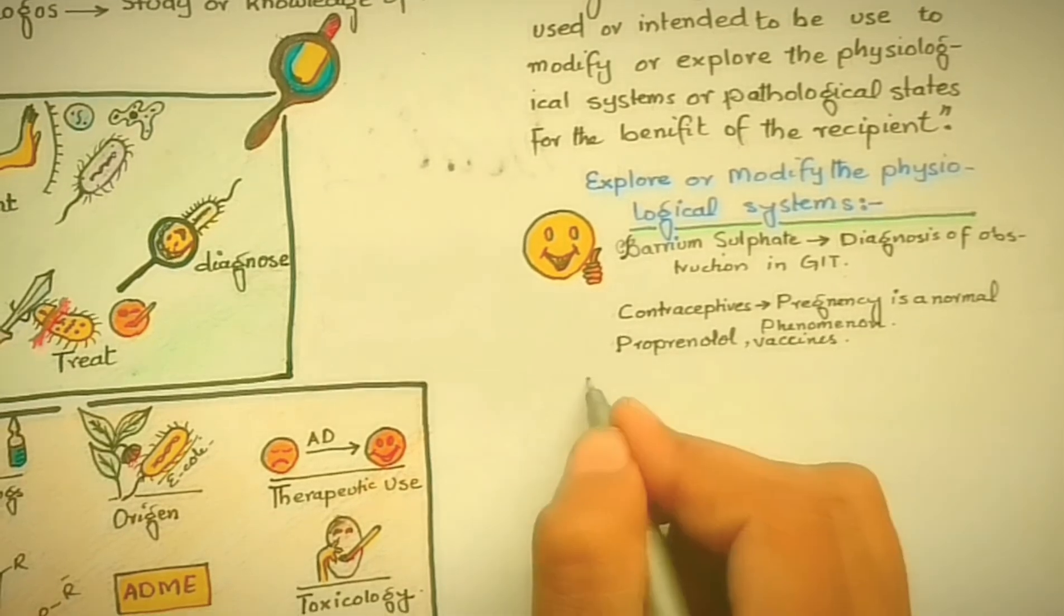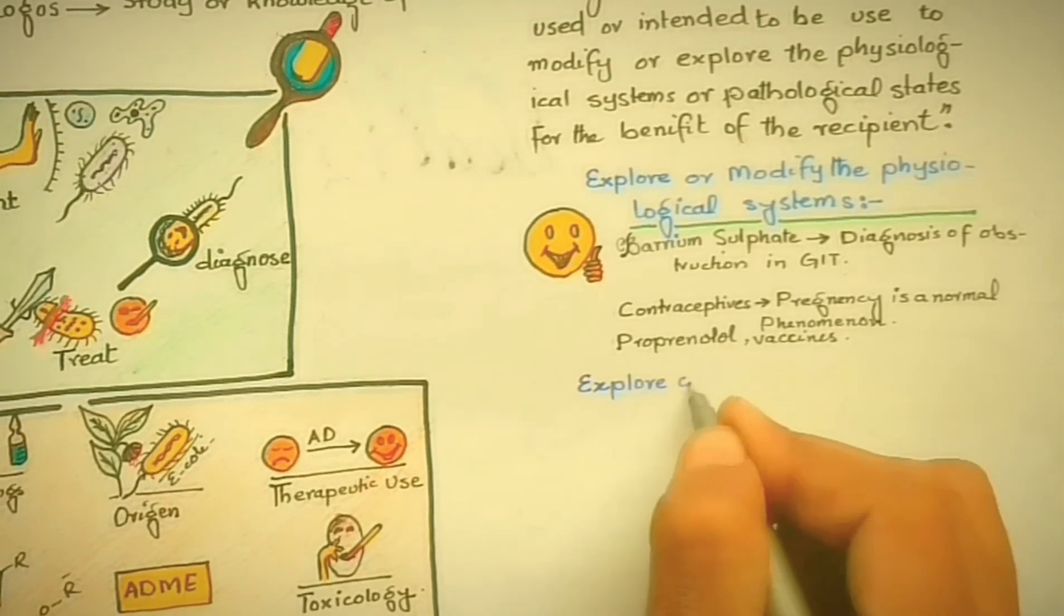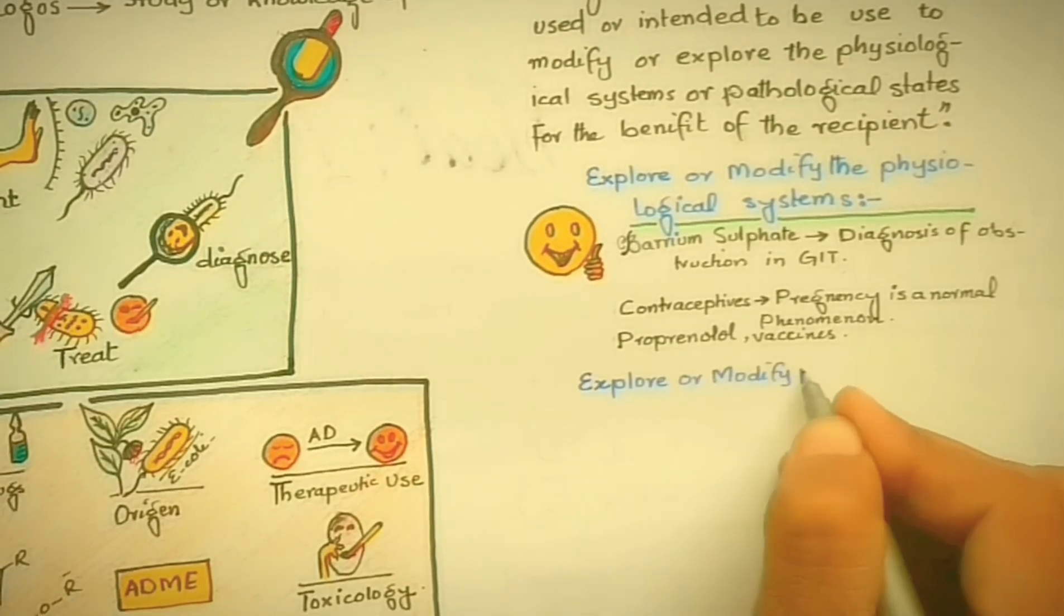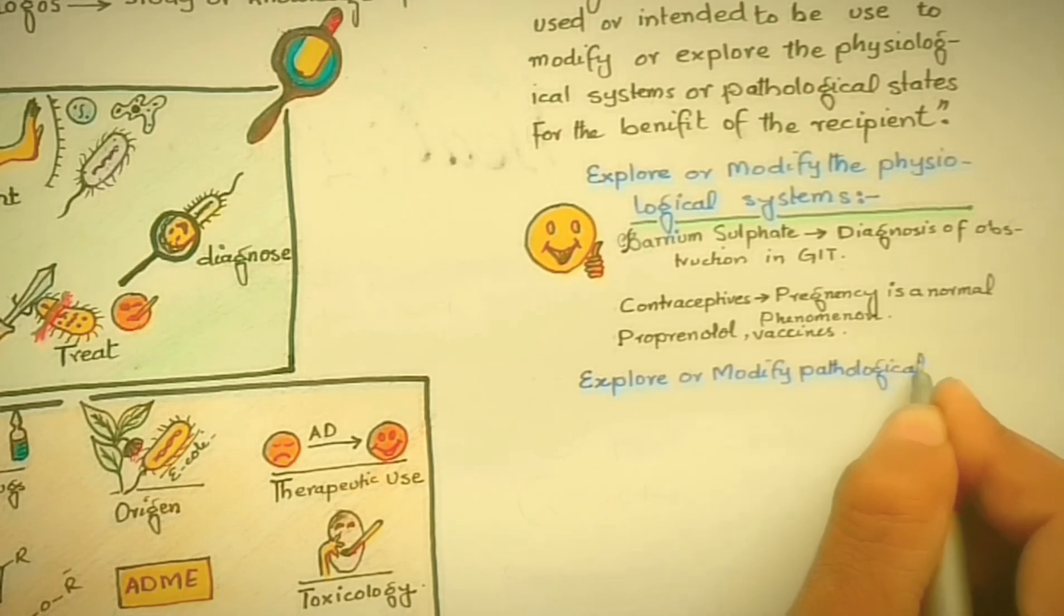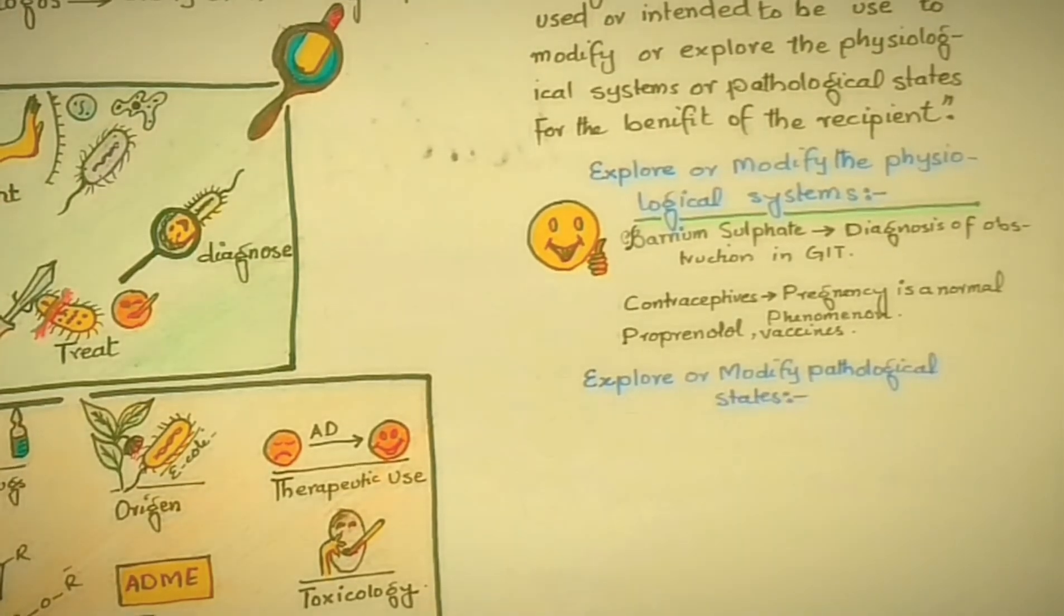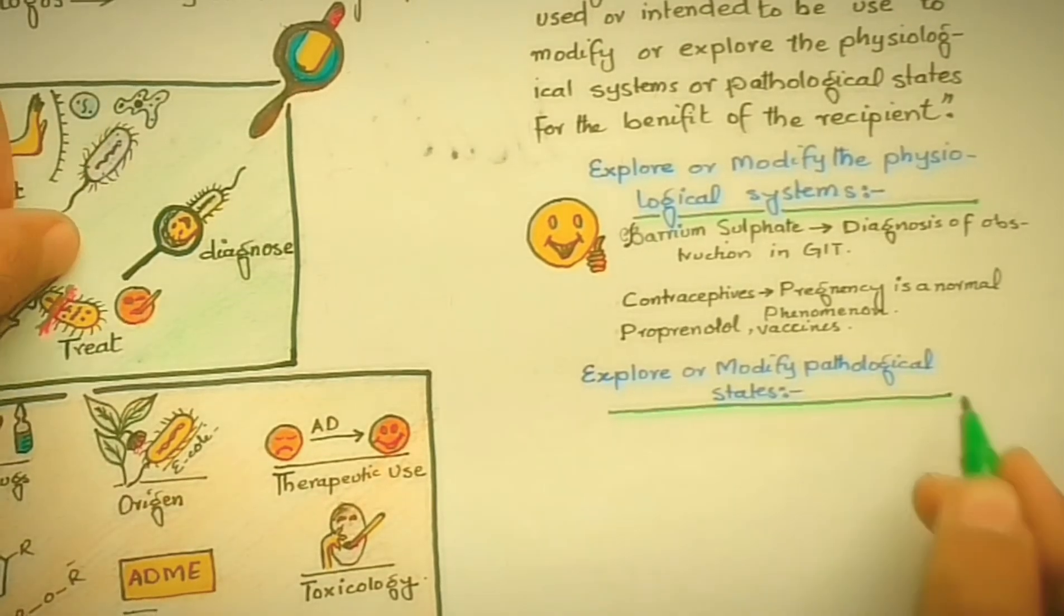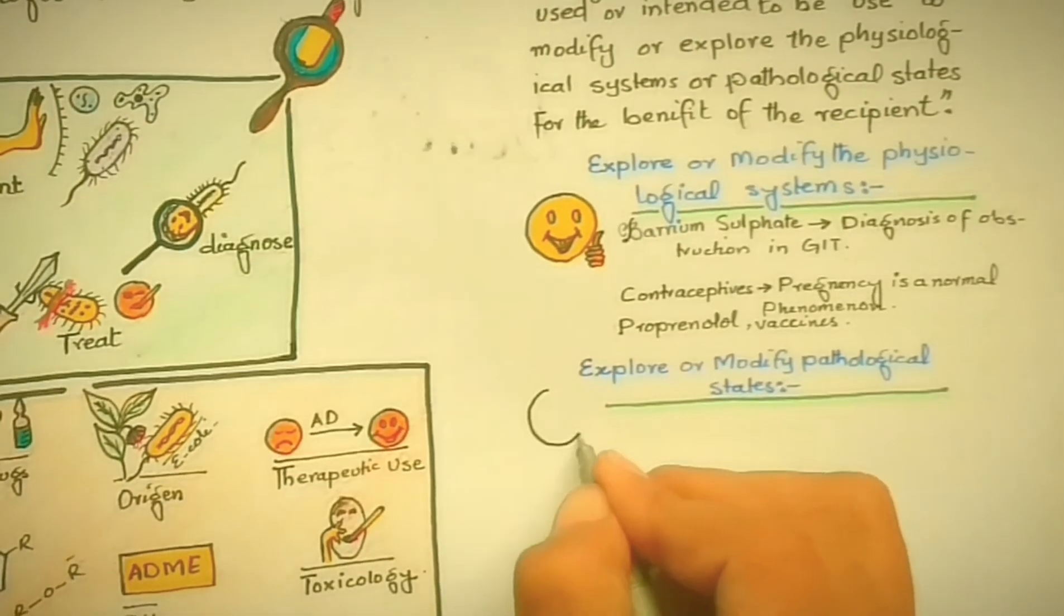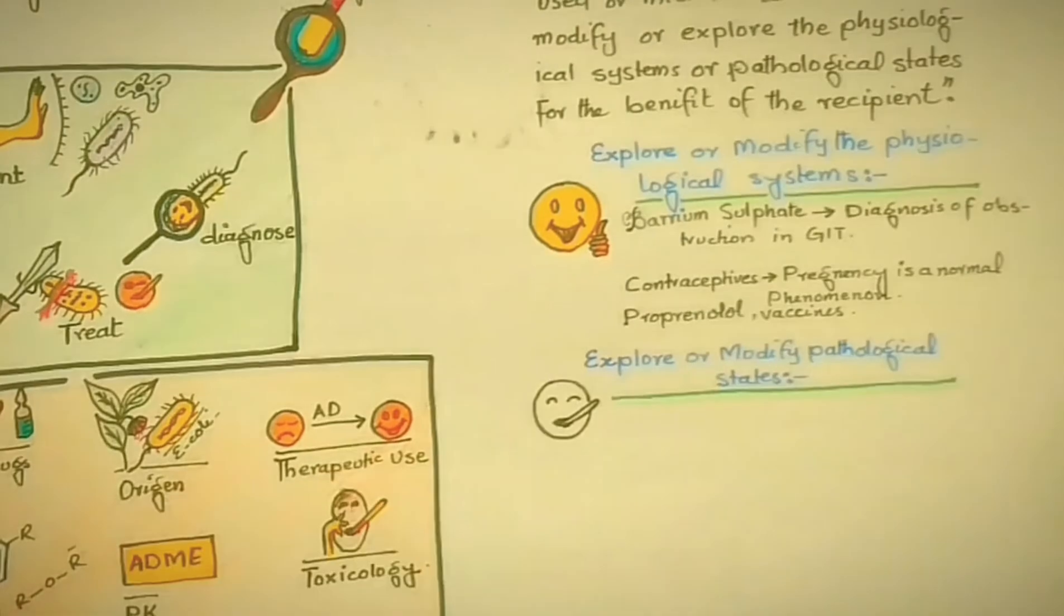Drugs are mostly used for treatment purposes—for pathological states and their modification. But sometimes drugs are used for exploring, investigating, or diagnosing the condition of being diseased.